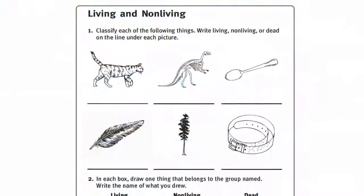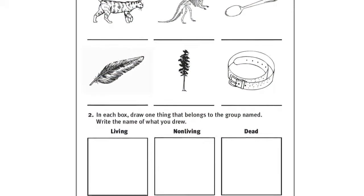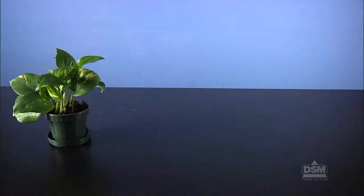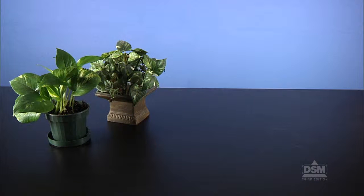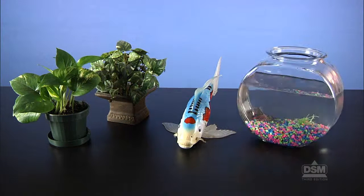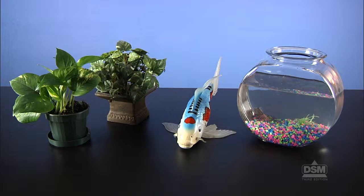To prepare for the activity, make a copy of Activity Sheet 1 for each student. Gather examples of living and nonliving things, such as a living plant and an artificial plant, and a toy stuffed animal and living animal, such as a gerbil, goldfish, or turtle.